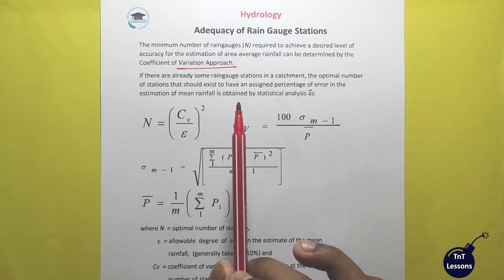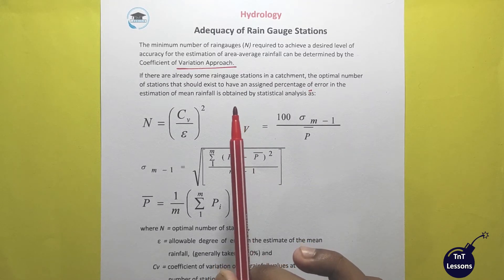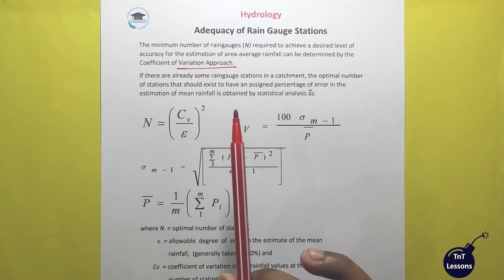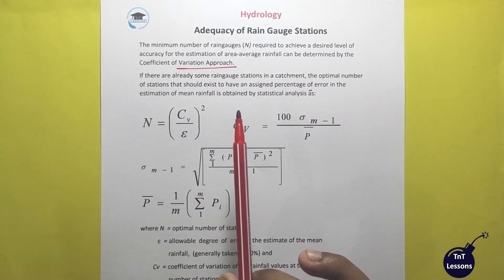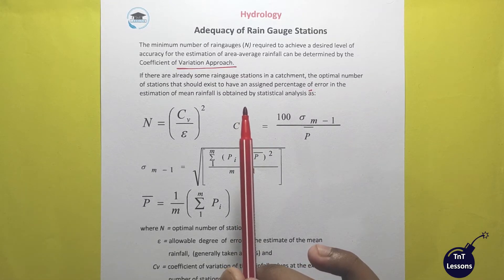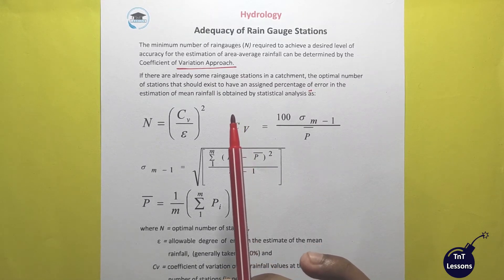Meaning, if there are any stations in the connected area, we know there are many errors. So this is the minimum number of rain gauges — the optimal amount of rain gauges — the minimum number of rain gauges that have to perfectly cover the rainfall area.